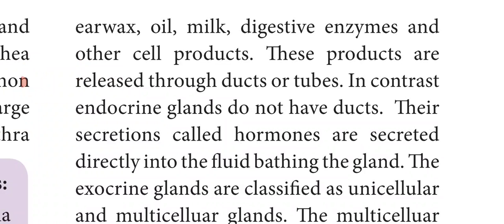The secretions of exocrine glands are released through ducts or tubes, hence the name exocrine glands. Endocrine glands are called ductless glands because they don't have any vessels or ducts. Their secretions are called hormones. Examples of endocrine glands are thymus and thyroid. Hormones are secreted directly into the blood bathing the gland and carried to different parts of the body where their functions are required.